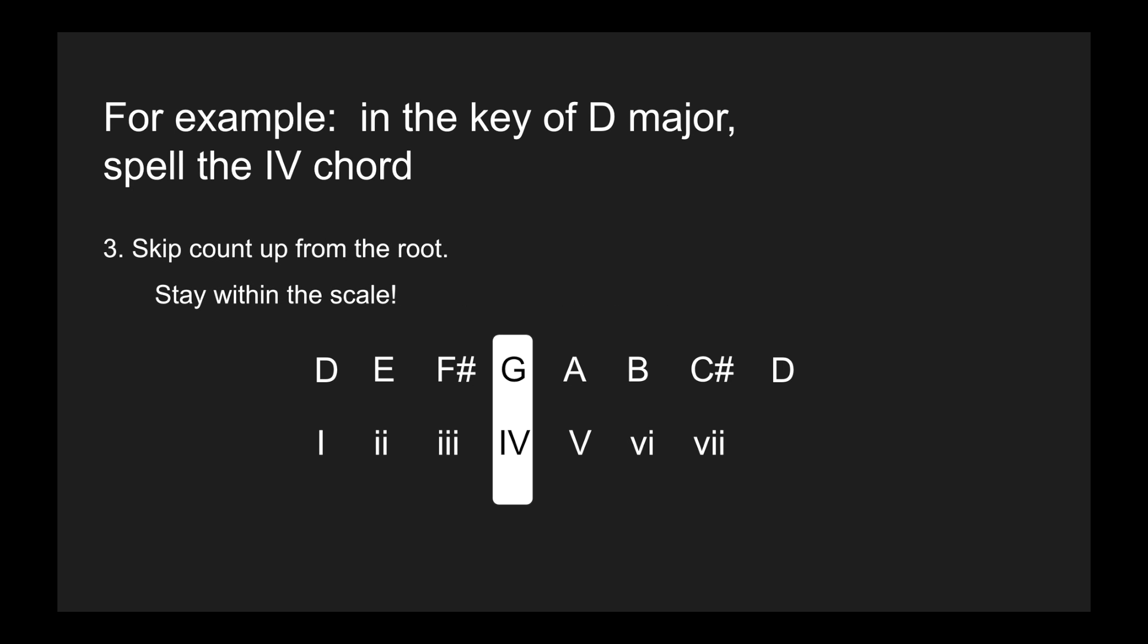Now I'm gonna skip count up from the root, staying within the scale. So G, I skip A and it lands me on B. Then I skip C sharp and it takes me to D. So now that's it - the chord is G, B, D.